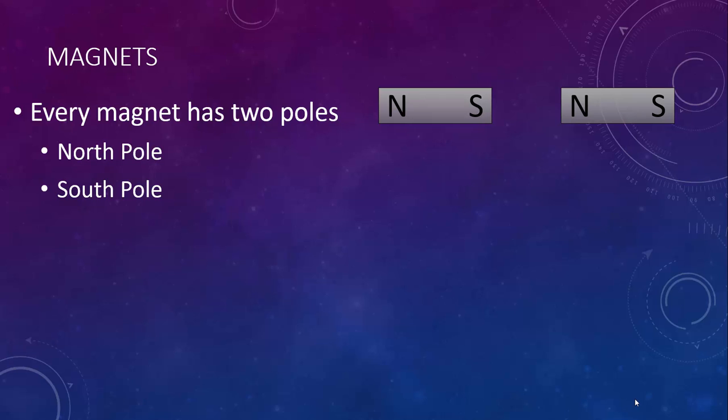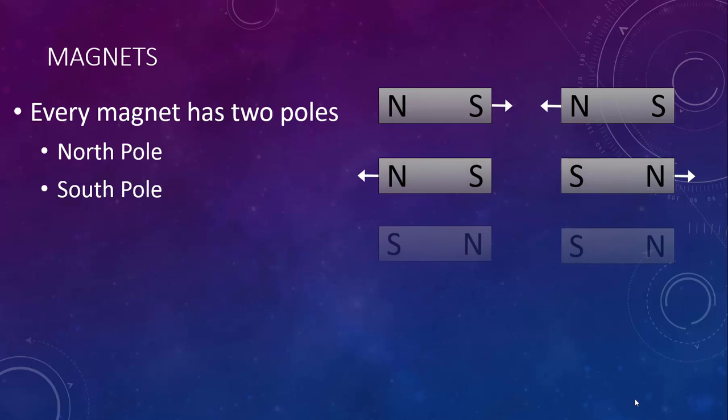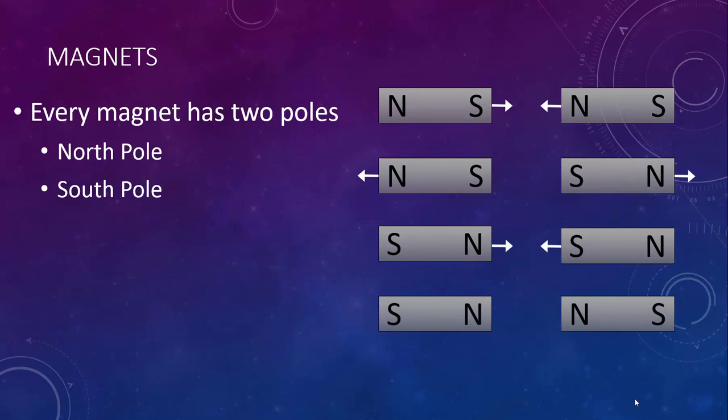Based on their orientation, these two magnets would attract each other. These two would repel. These two magnets would attract, and these would repel. Like poles repel each other, opposite poles attract.